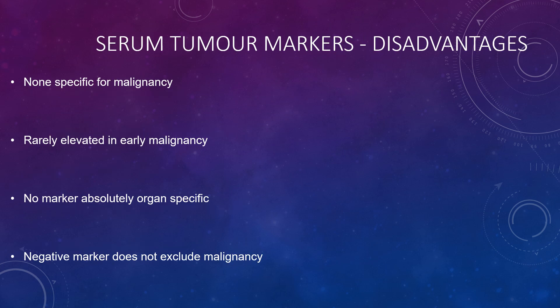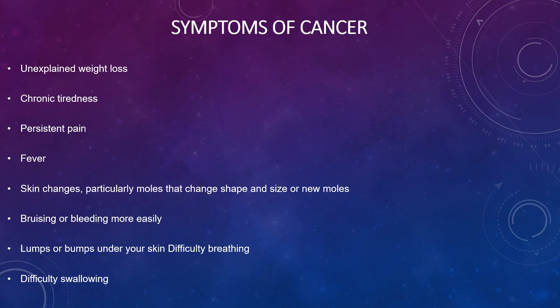There are various disadvantages of tumour markers: they are non-specific for malignancy, they rarely increase in early malignancy, there is no marker which is absolutely organ-specific, and a negative marker result does not rule out malignancy.